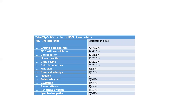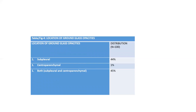Coming to the distribution of HRCT characteristics: ground glass opacities were seen in 77.7% of patients, ground glass opacities with consolidation in 46.6% of patients, isolated consolidation in 35.5% of patients, and lymphadenopathy in 10.1% of patients. Regarding the location of ground glass opacities: in 45% of cases they were seen in both subpleural and centroparenchymal location, in 44% only in the subpleural location, and in 1% only in the centroparenchymal location.